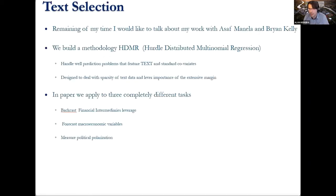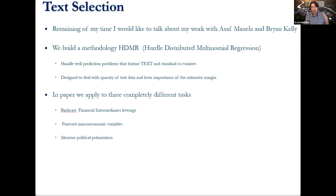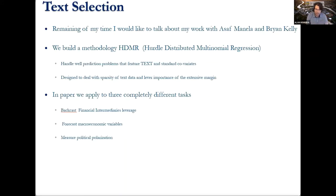We're still a little bit off from being able to let the data speak and be clearly interpretable. I want to advertise a paper I have with Brian and Azaf — we built an HDMR methodology designed to handle prediction problems that feature text and also many quantitative variables. It's designed to deal with the sparsity of text data and it's very easy to use. In the paper, we apply it to different tasks: we back-cast financial intermediary leverage, forecast macroeconomic variables, and measure political polarization. So it's very versatile.